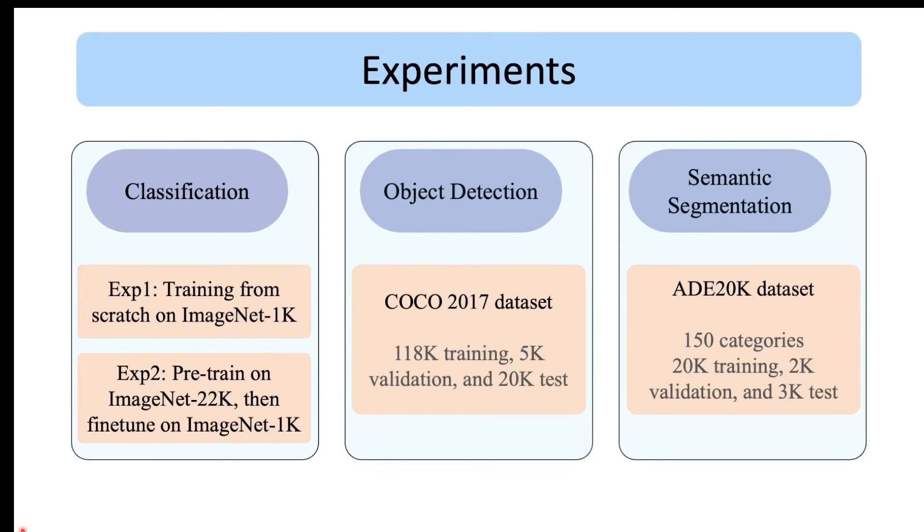Now let's see the experiments conducted by the authors. Recall that the objective of this paper is to build a general purpose backbone for vision problems. So the authors have applied the model for solving classification, object detection, as well as semantic segmentation, and they have compared the performance of Swin Transformer with CNNs as well as other ViT-based models that we covered in previous videos.